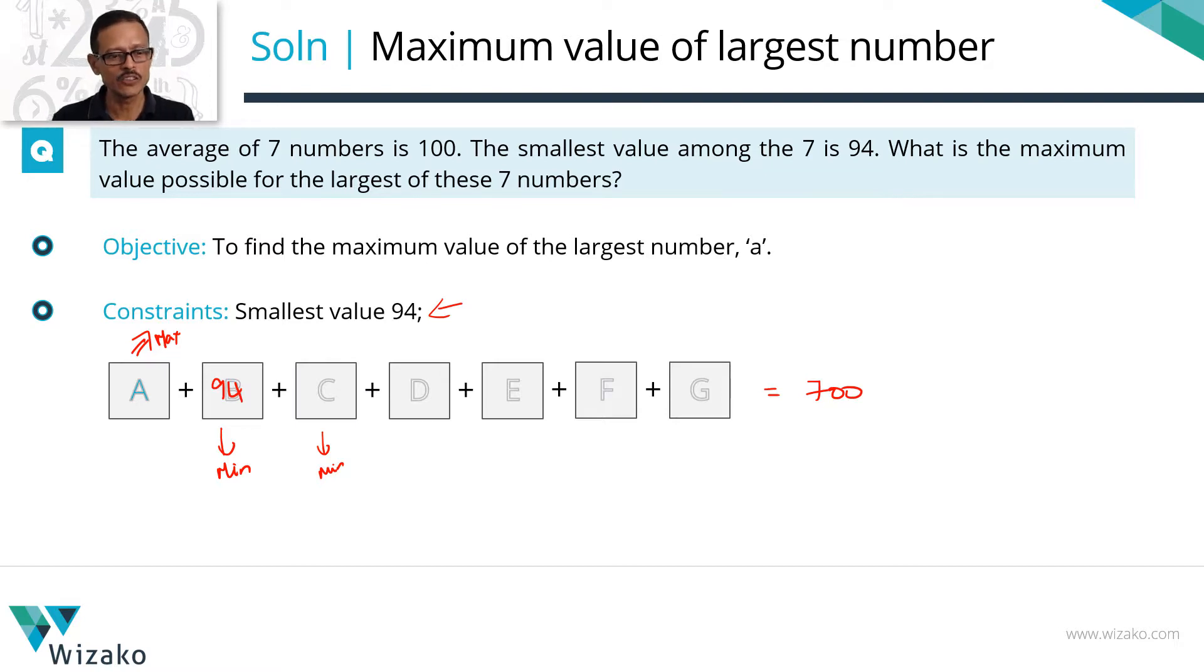So let's minimize C. How low can a value of C be? If the least possible value has been given to B, then C has to be 1 more than that. This has to be a 95. That's a temptation we are getting. Hold on for a minute. Before we make C a 95.